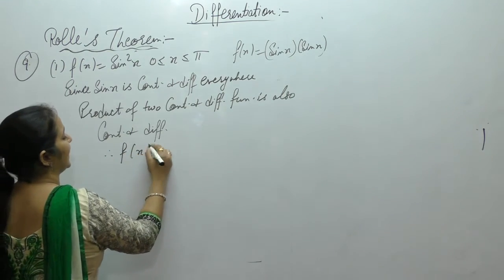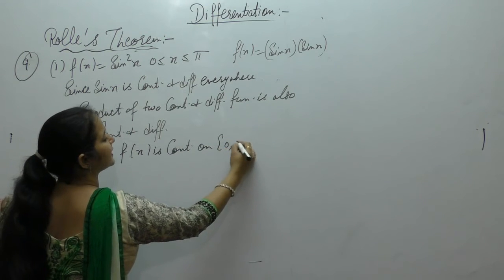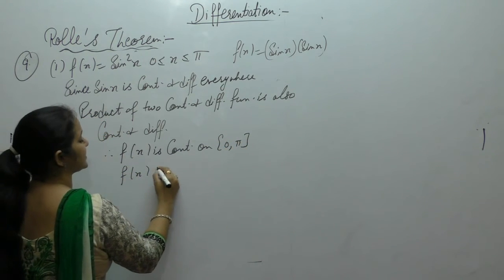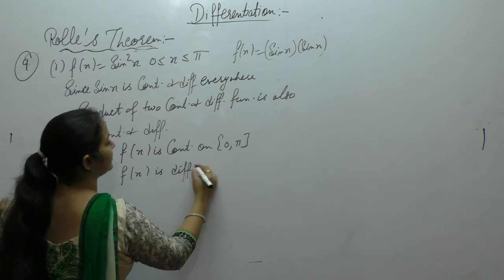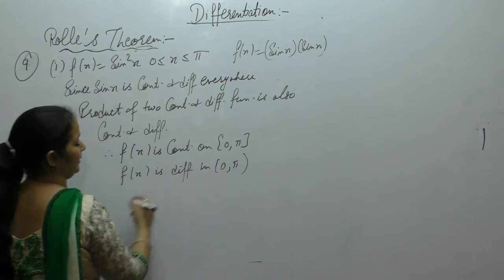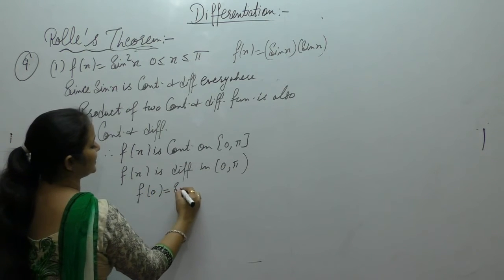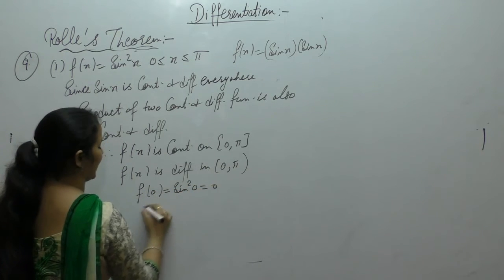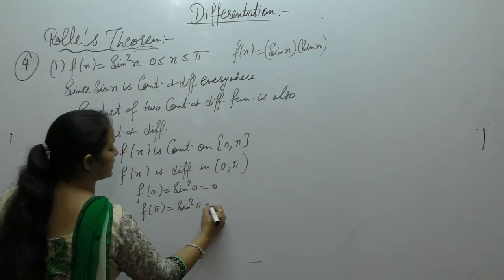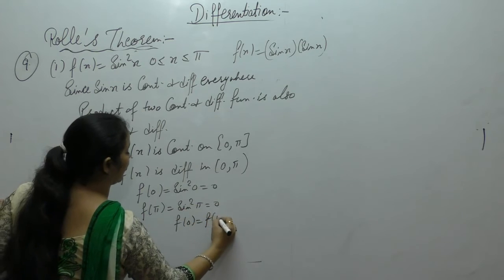Therefore f(x) is continuous on the closed interval [0, π] and differentiable on the open interval (0, π). Now f(0) = sin²(0) = 0, and f(π) = sin²(π) = 0. So f(0) = f(π).